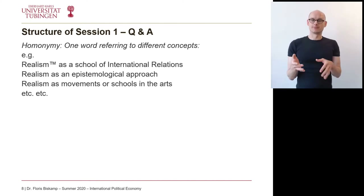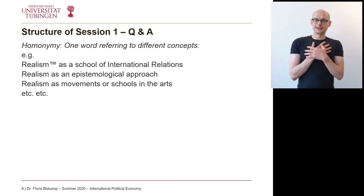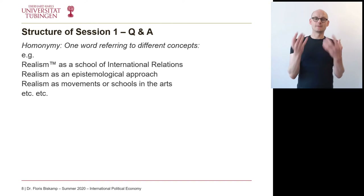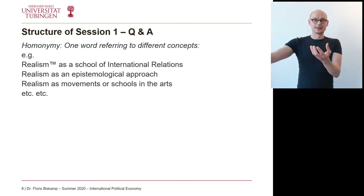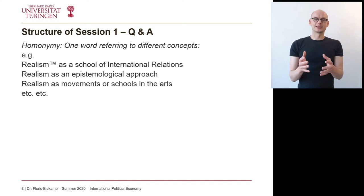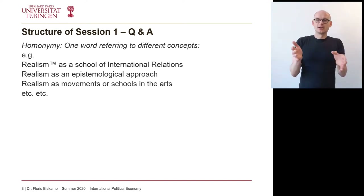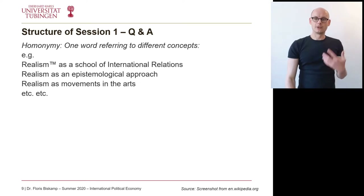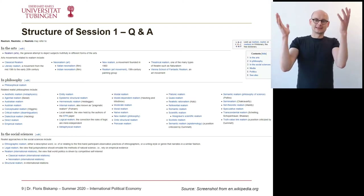However, there are also other meanings of the term realism. For example, there is realism as an epistemological approach, where you say there is a world outside human knowledge, outside human descriptions, and that if humans know something there is actually a connection between this outside world and the way we describe it. This is epistemological realism. There is also realism as a movement in the arts, where art should depict the world — painters who want to paint pictures that look like the world really looks. And then there are endless things that are called realism.